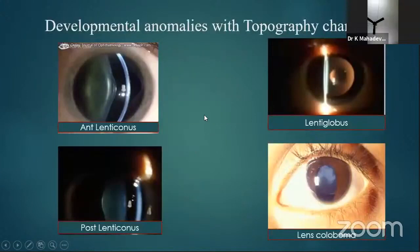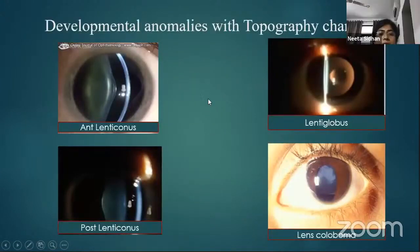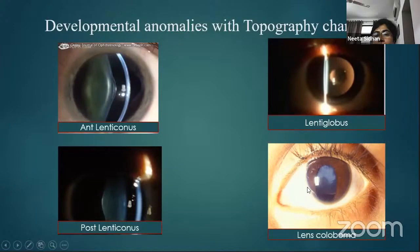Examples of other developmental anomalies include lenticonus, where you get a conical protrusion of the lens surface, either anterior or posterior. There is also lens coloboma, where you get a sectoral defect in the margin of the lens with associated zonules, typically in an inferior location associated with iris coloboma.